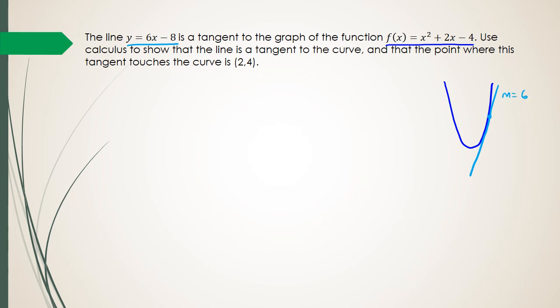So what we're trying to prove is use calculus to show that the line is a tangent to the curve and that the point where this tangent touches is (2, 4). So we're actually trying to prove that the green point here is going to be (2, 4).